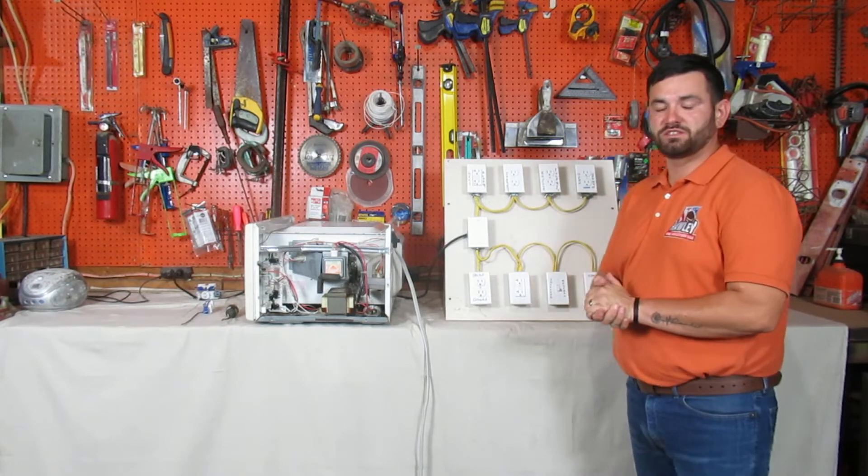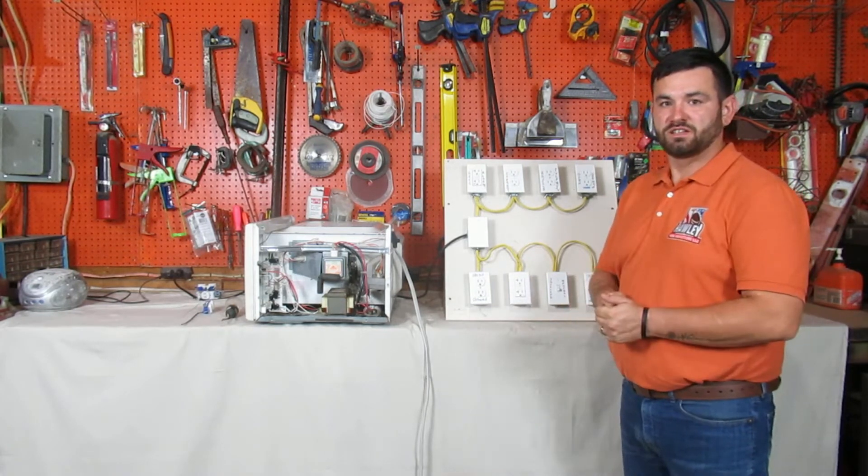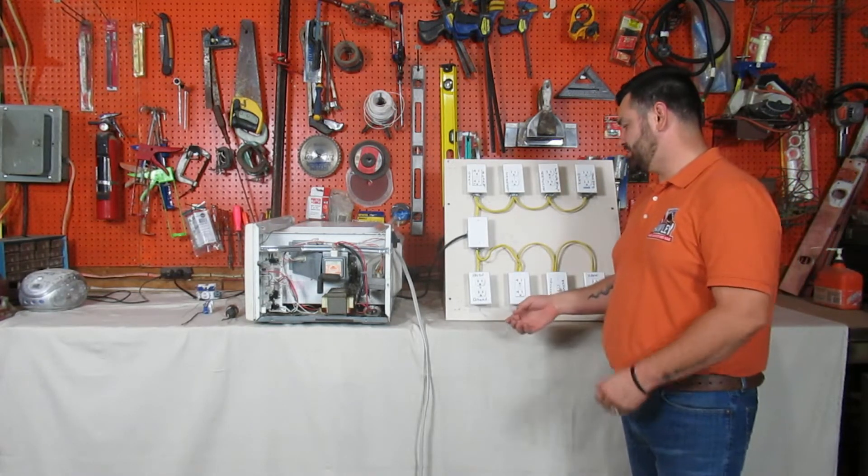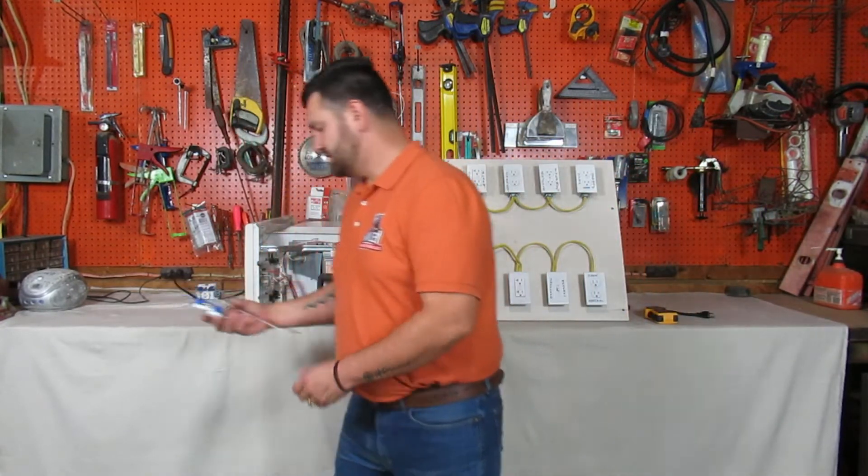Michael here with Hawley Home Inspections. We have another episode of what's wrong with your house. We previously were talking about open grounds and ungrounded outlets. Today we're going to talk about a false ground. This will typically happen when they take a three-prong receptacle and wire the ground wire to the neutral wire.